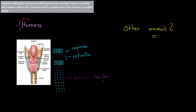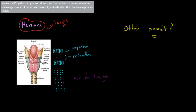In the last video, we talked about humans and what kind of system they have in place to produce sound. We said that the actual larynx was one of the main structures. There's also the teeth, the tongue, the soft palate, etc. But the larynx was one of the most important structures for us to produce sound.